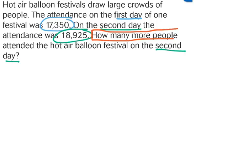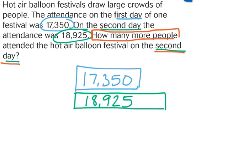I want to know how many more people attended the second day, so let's set up a picture to help us solve this problem. I need my first day and my second day, and I'm going to use rectangles to help show those numbers of people. When I'm drawing my model, I want to make sure that if a number is larger, that rectangle is larger, so I can see the difference between our two days. On top I have my first day, 17,350 people, and on the bottom I have my second day, 18,925 people. What I'm trying to find is how many more people attended on the second day — what is this gap? What is this section equal to? This is what I'm trying to find. This is my question.